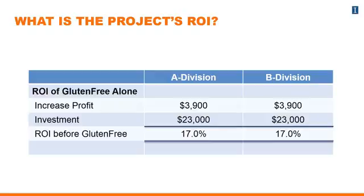Let's take a look at the return on investment of the gluten-free option. The increase in profit earned by the gluten-free option is $3,900 for both Division A and Division B. The investment required to install the ovens and machinery is $23,000 for both divisions. Therefore, just for the gluten-free menu investment, we will earn a 17% return on investment — that's $3,900 divided by $23,000. This option for both divisions seems worth it, as it exceeds the 12% threshold required of investments.